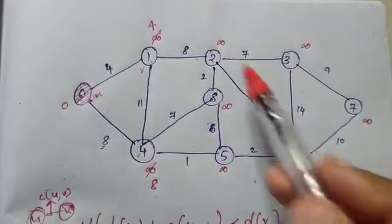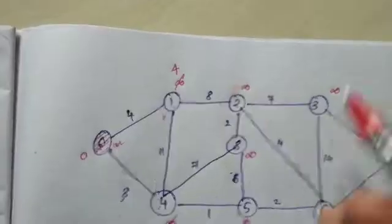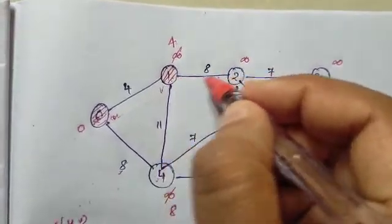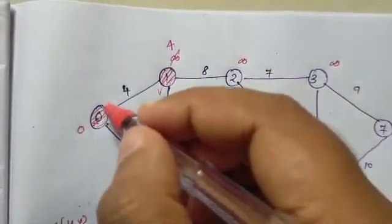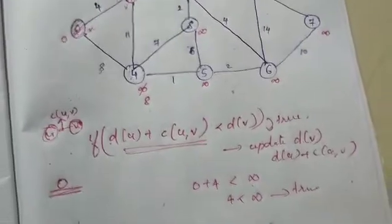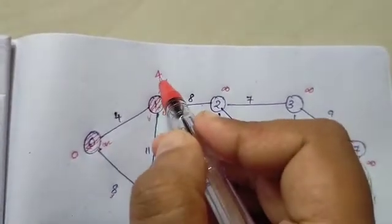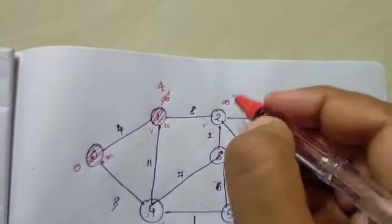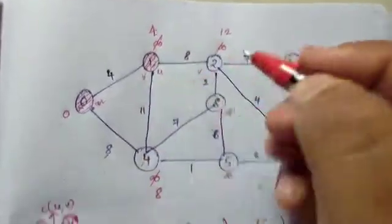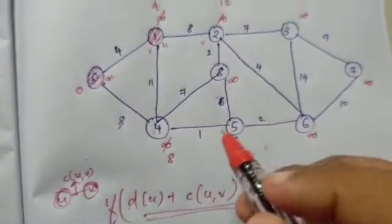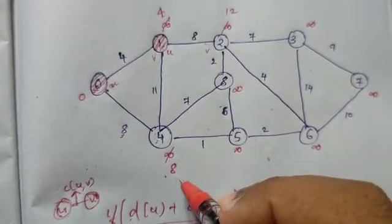The distances are 4 and 8; infinity otherwise. So 4 is the minimum distance. We select vertex 1, which is connected to vertices 2 and 4. Vertex 0 is already visited. d(u) is 4; 4 plus 8 is 12, and 12 is less than infinity — update. Also, 4 plus 11 is 15; 15 is less than infinity — update.